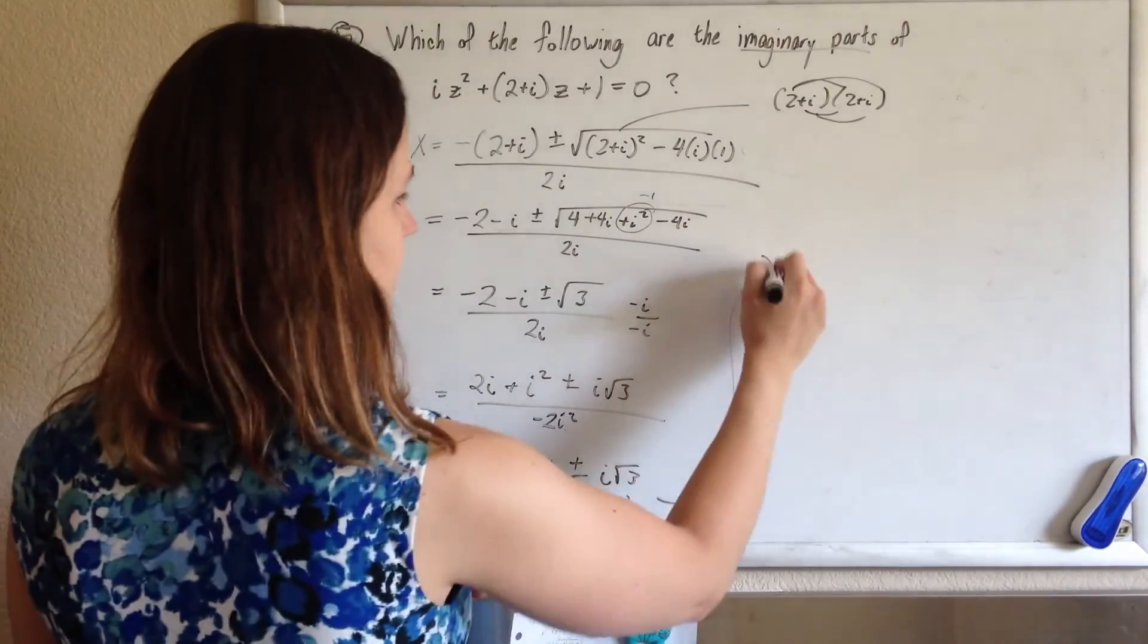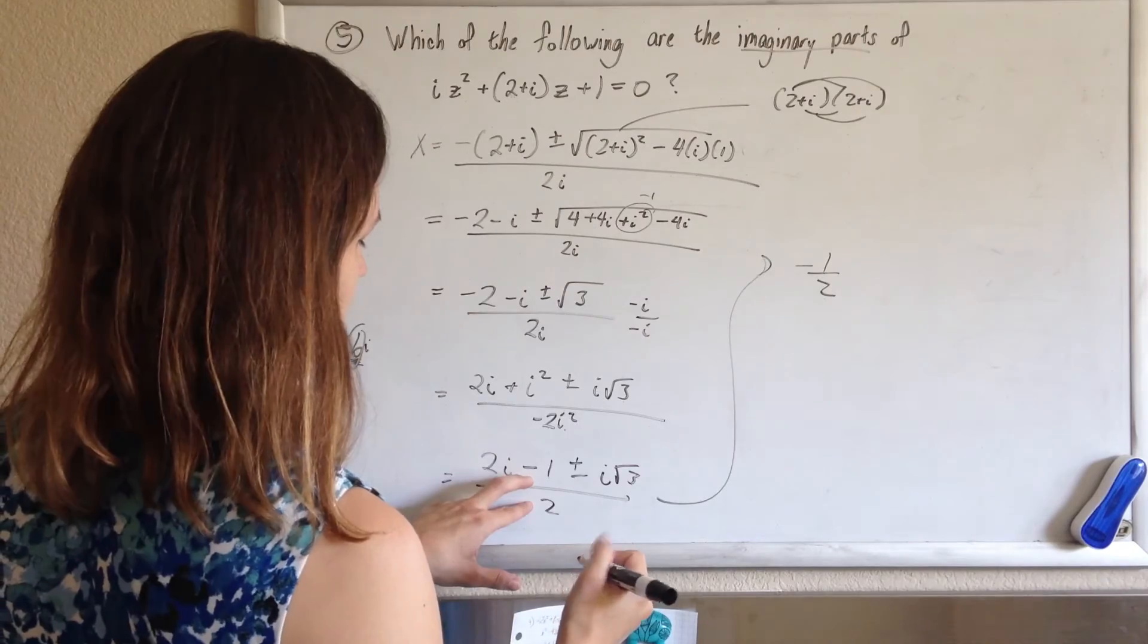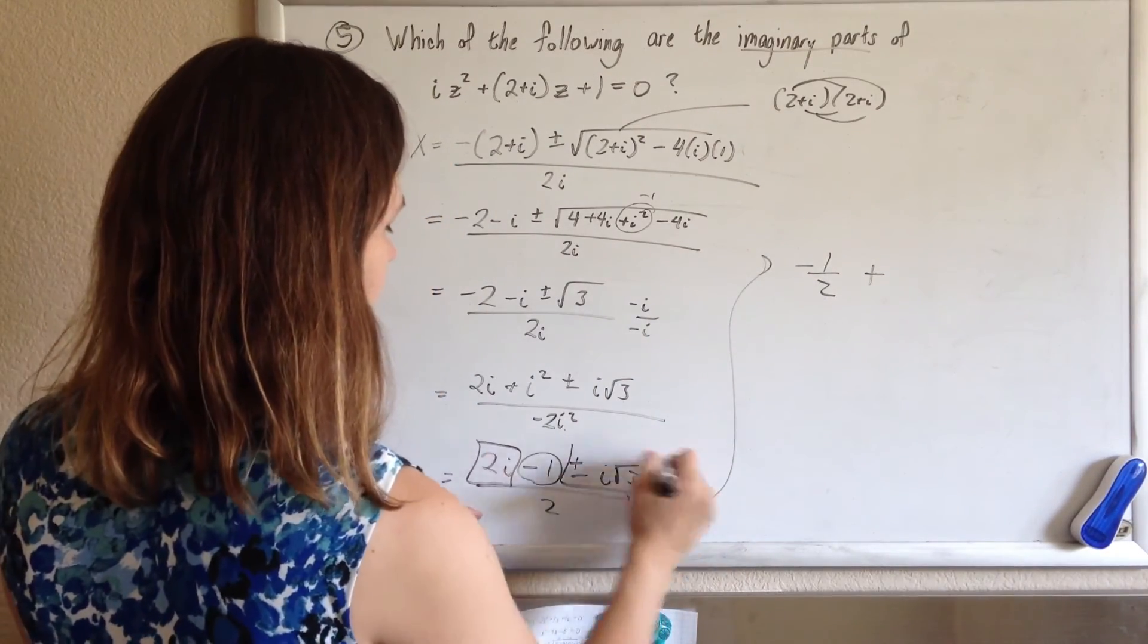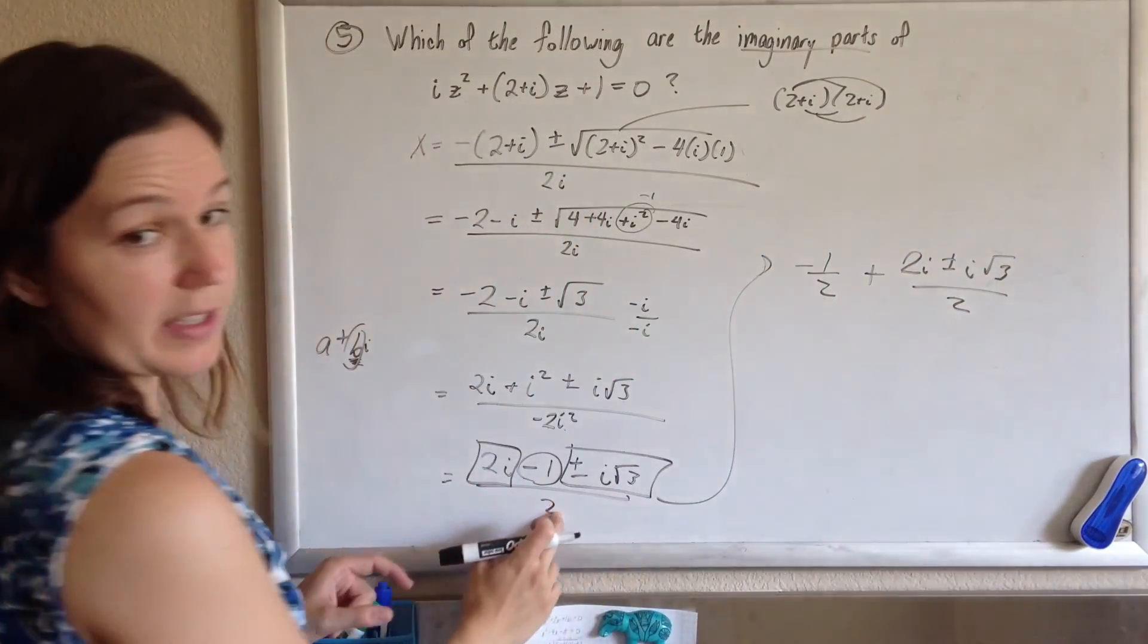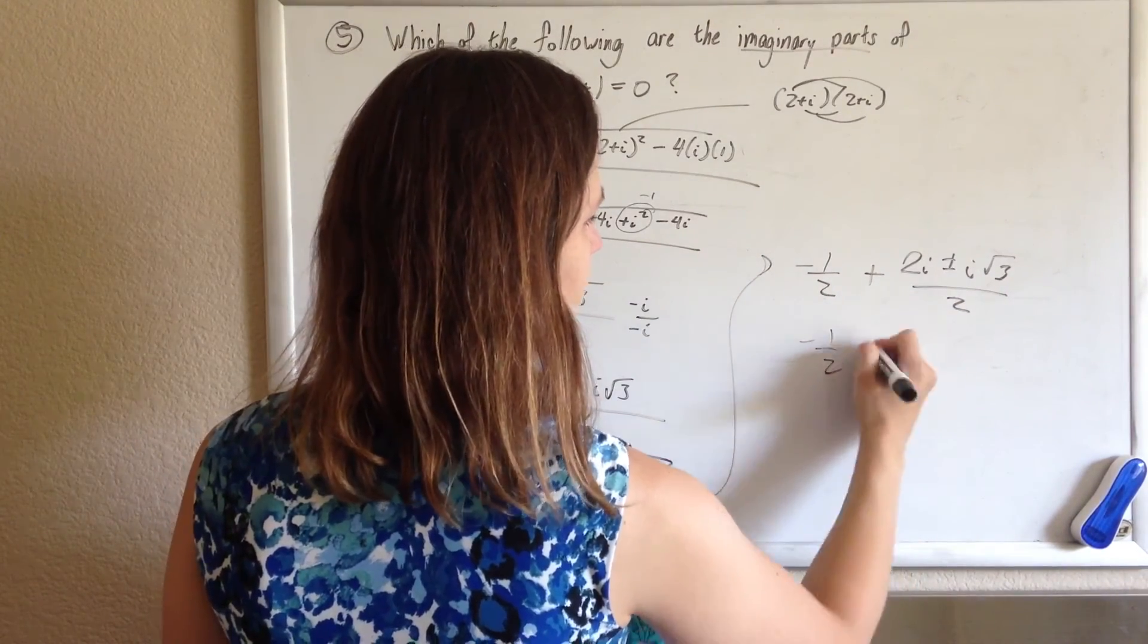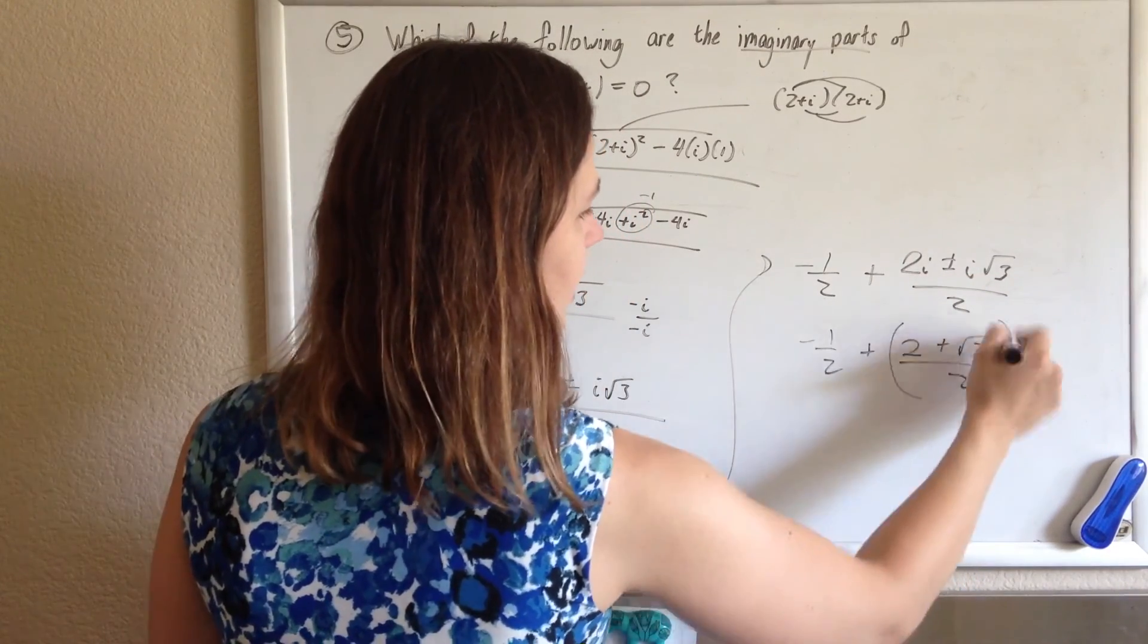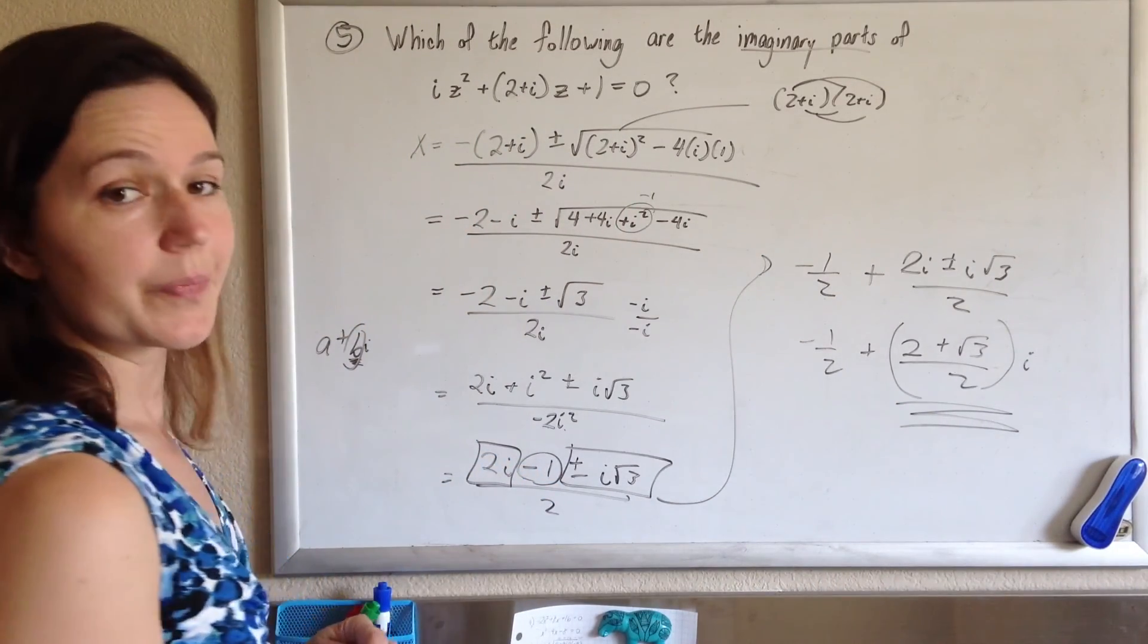So if we just split this up into the reals and the imaginaries, we can rewrite this as negative 1 over 2, and then that's the real part, we've taken care of that guy. And then the imaginary part will be left with 2i plus or minus i rad 3, and that whole thing is being divided by 2 also. So, and then if you just sort of factor out the i from that, take the i out of both of those, screw it to the side, this part there is what they want, 2 plus root 3 over 2. And that should do it.